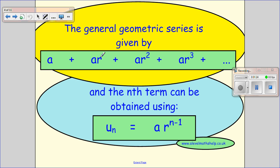It's the second term so 2 take away 1 is 1 so that's a r. And the third term would be a r, 3 take away 1 is 2 so it's a r squared and so on.